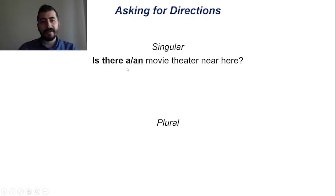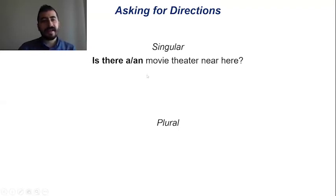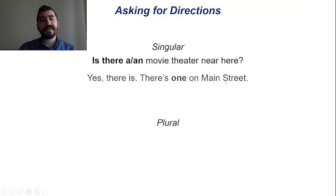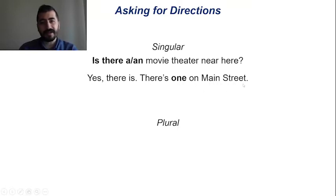A or AN? We can use A for consonant — B, C, D. And AN for vowel sounds. Is there an apple here? Is there a movie theater near here? Yes, there is. Yes or no question. There is one on Main Street, on Atatürk Street, on Osman Paşa Street. No, there isn't one.